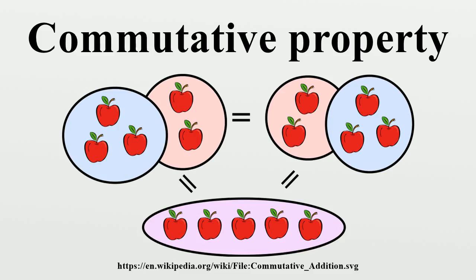Mathematical definitions: The term commutative is used in several related senses. A binary operation on a set S is called commutative if it satisfies the property. An operation that does not satisfy the above property is called non-commutative.